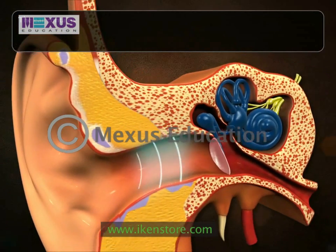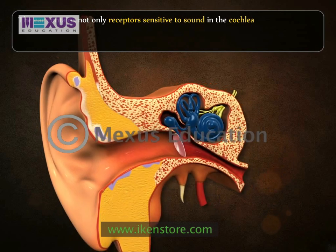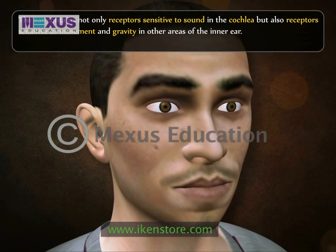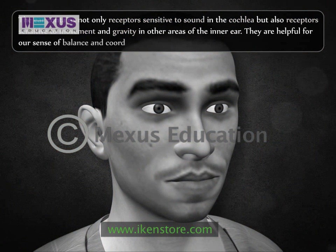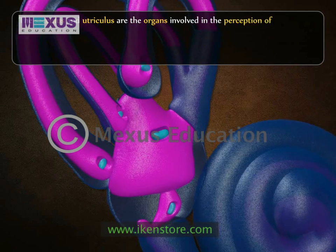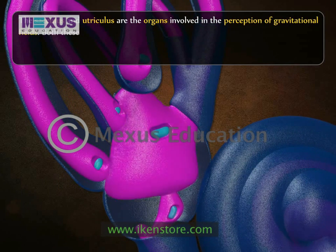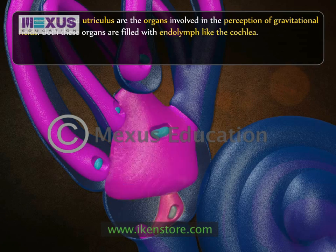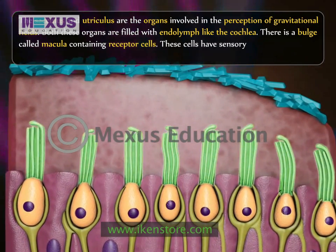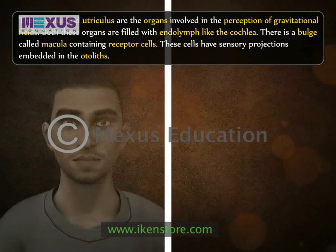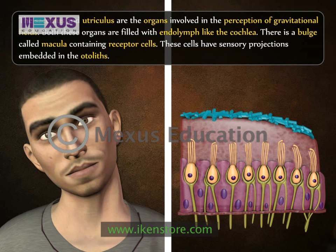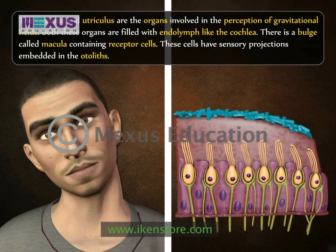The ear contains not only receptors sensitive to sound in the cochlea but also receptors sensitive to movement and gravity in other areas of the inner ear. They are helpful for a sense of balance and coordination. The sacculus and utriculus are the organs involved in the perception of gravitational fields. Both are filled with endolymph and have a bulge called macula containing receptor cells with sensory projections embedded in the otoliths. When the head tilts, the otoliths move away from the macula under the influence of gravity.